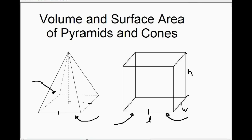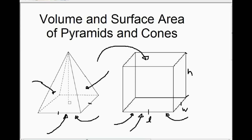If you filled this pyramid with water — let's say you tipped it upside down and it was a little paper cup — and you went to fill this cube with the water, it would take you three times to fill up the cube using a cup the shape of the pyramid. And again, as long as the bottom is the same size, the square has to have the same length and width on both of the shapes.